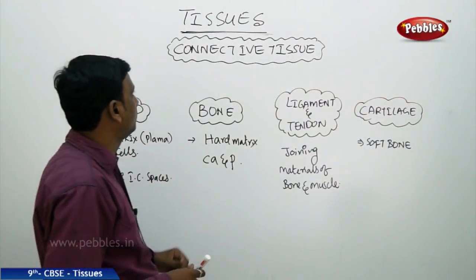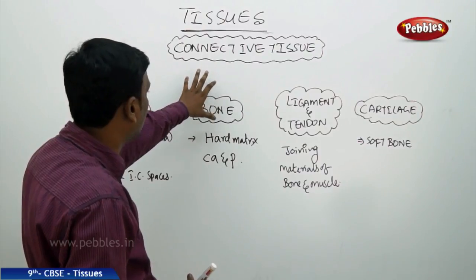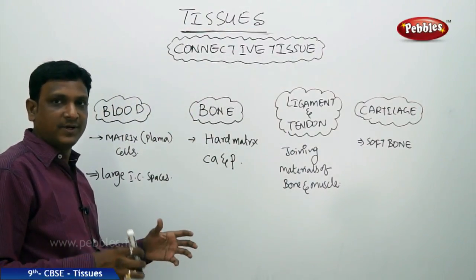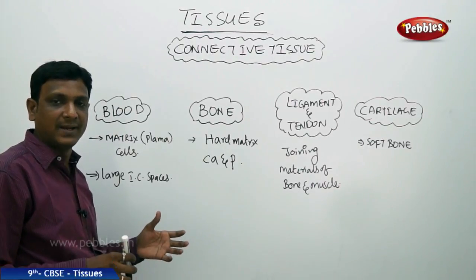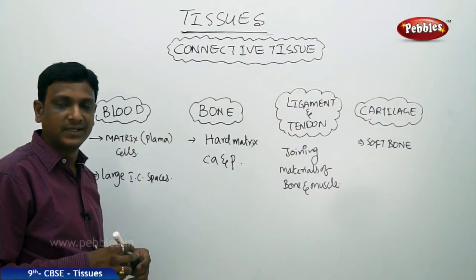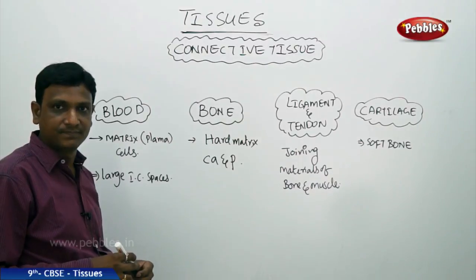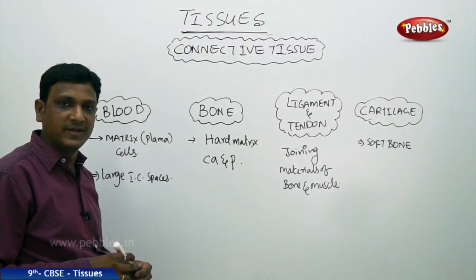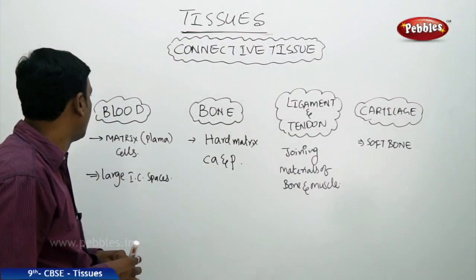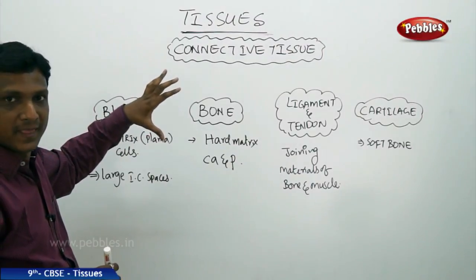Let us talk about the connective tissue. The name itself suggests that connective tissue helps in connecting different parts. The animal bodies are flexible, and the ability of the organism to move its body parts is possible because different parts are connected by different materials.